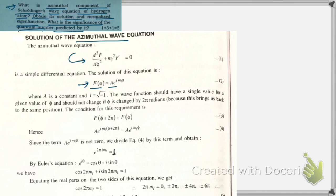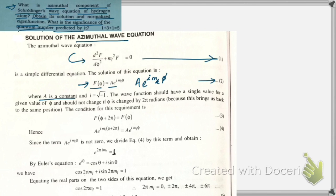We assume the solution is F(φ) = A·e^(i·ml·φ), where i is the imaginary unit and ml is the quantum number. A is a constant. This is equation number one.